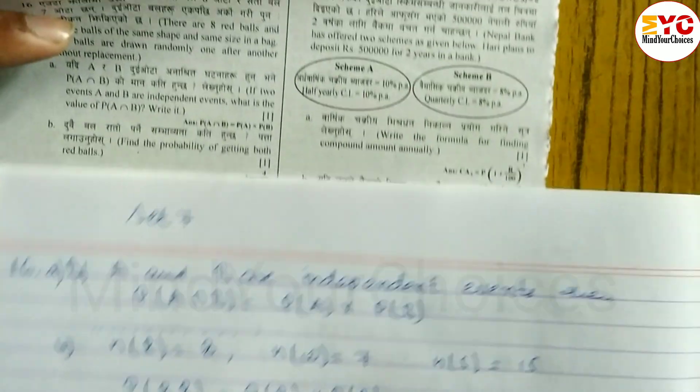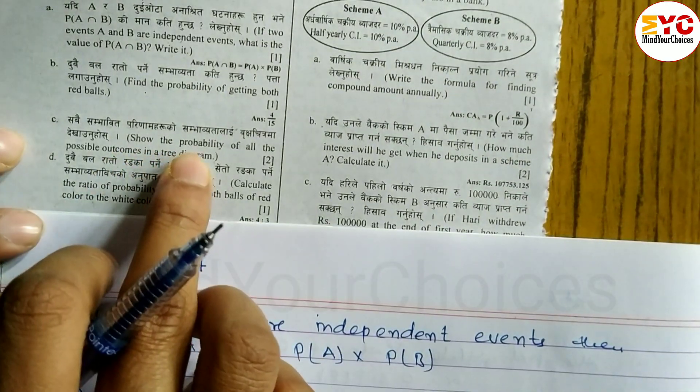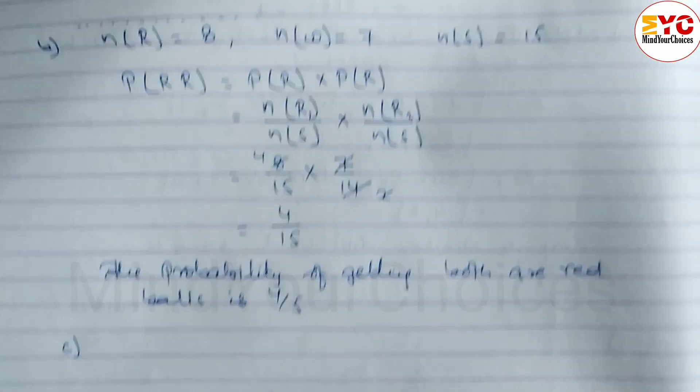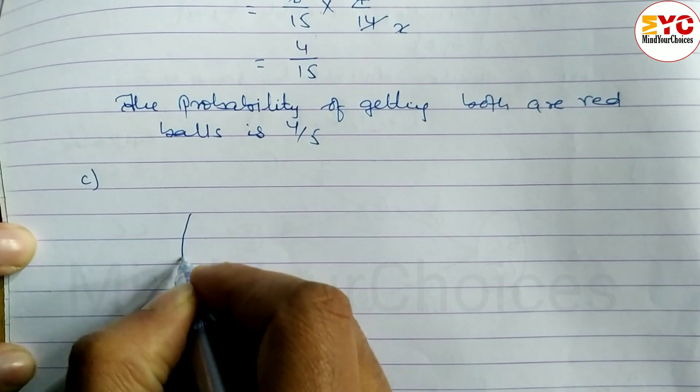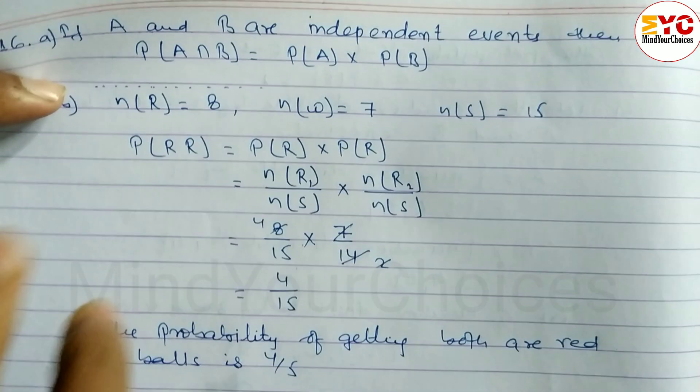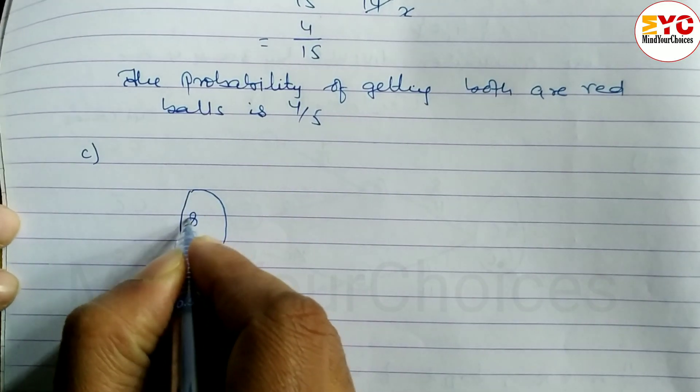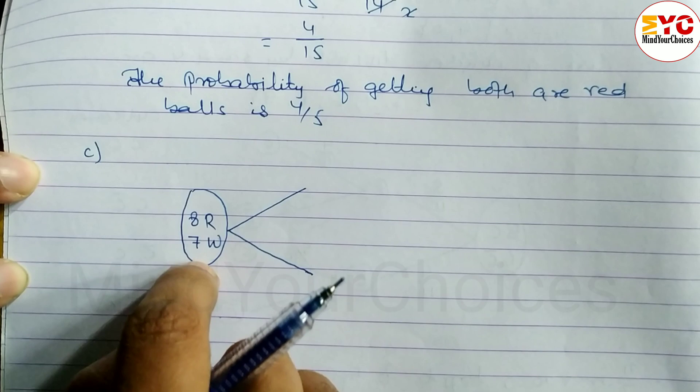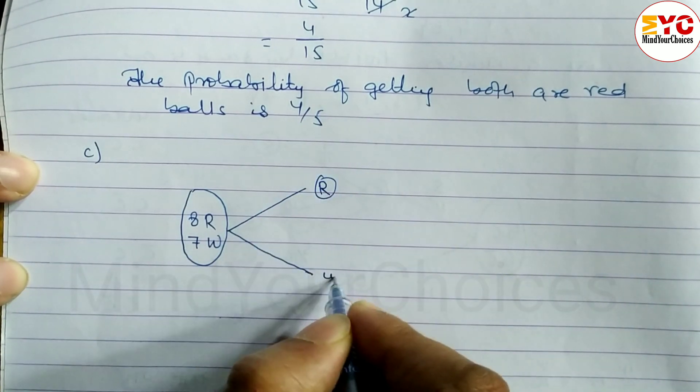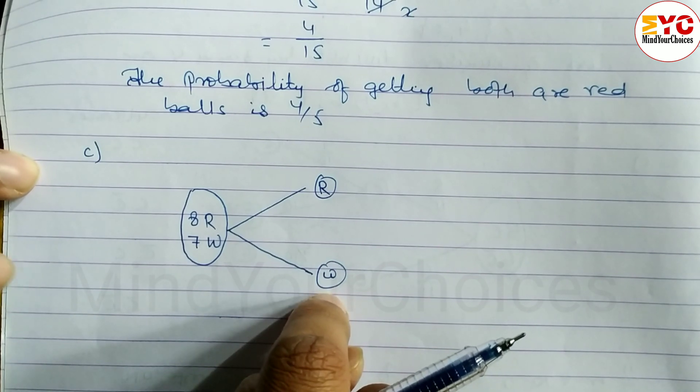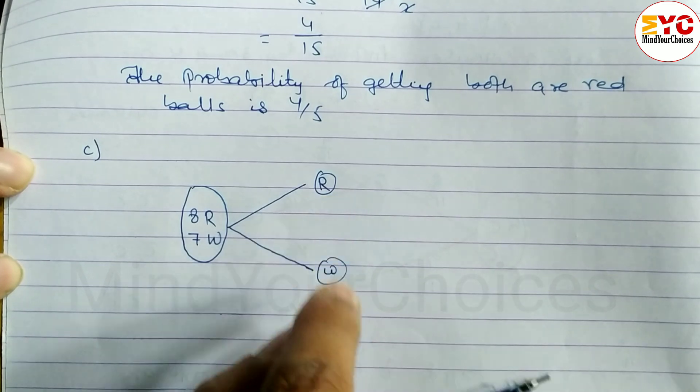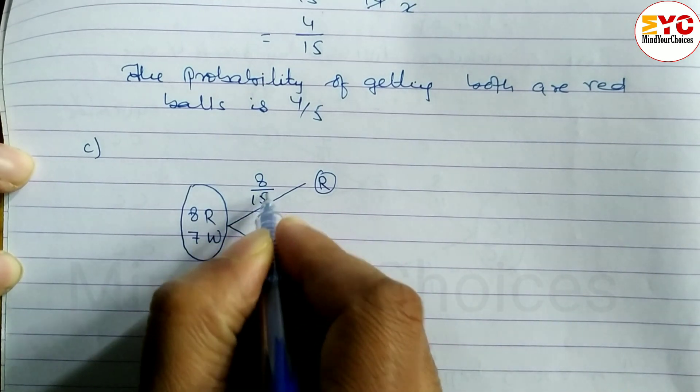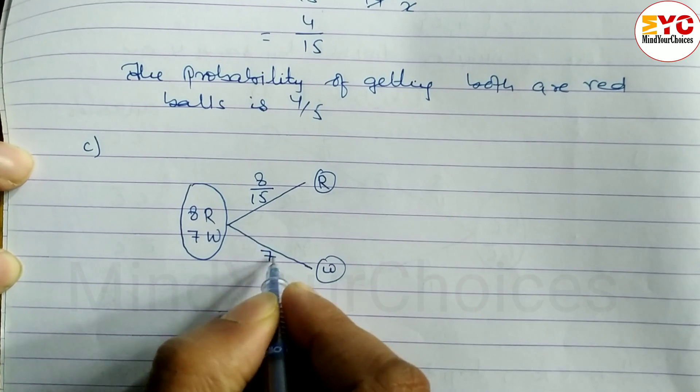Hope you understand this one. Now look at number C. Show the possibilities of all the possible outcomes in a tree diagram. It's very simple. So here we have to draw like this. Total 8 red balls and 7 white balls. If we draw a ball from this bag, either we get red or we get white. Red has a chance of 8 by 15, white has a chance of 7 by 15.